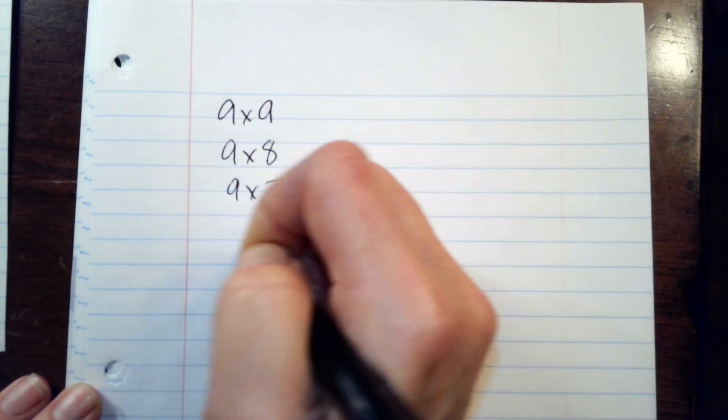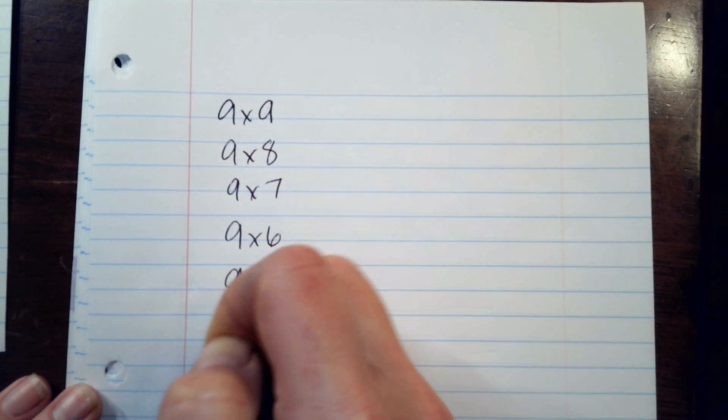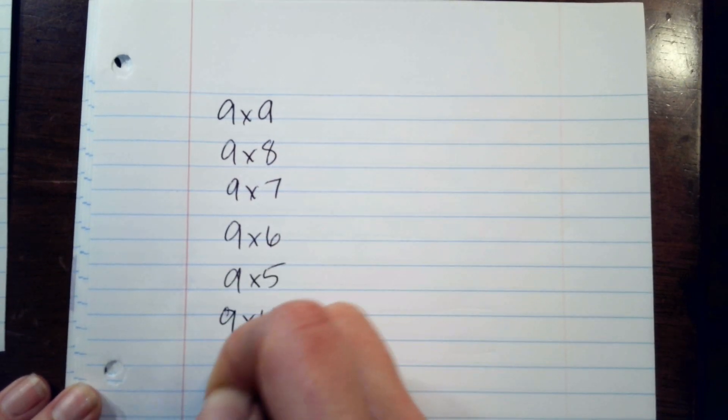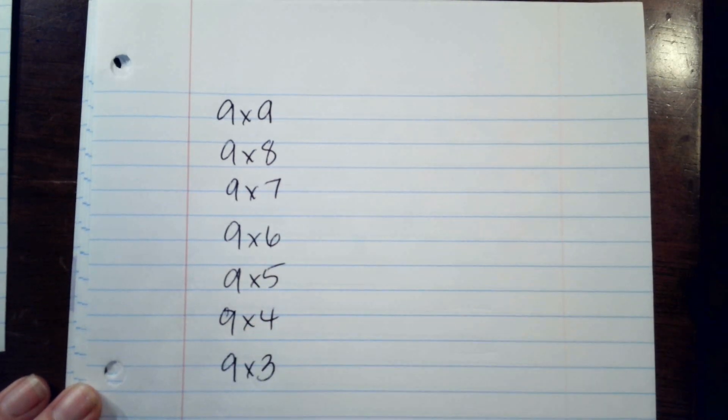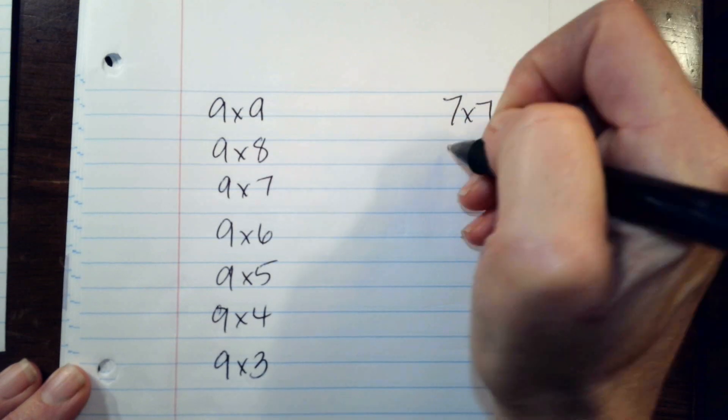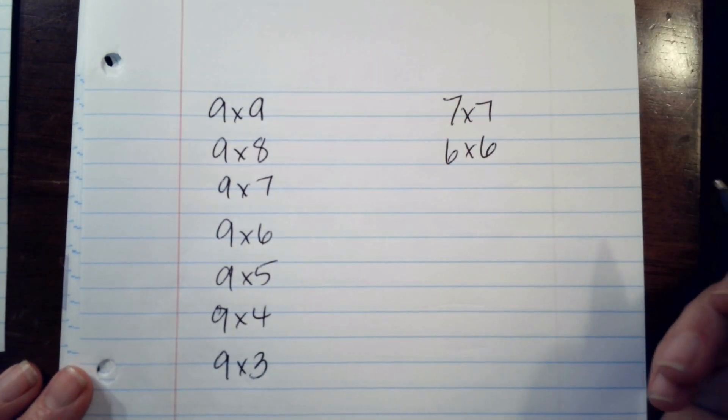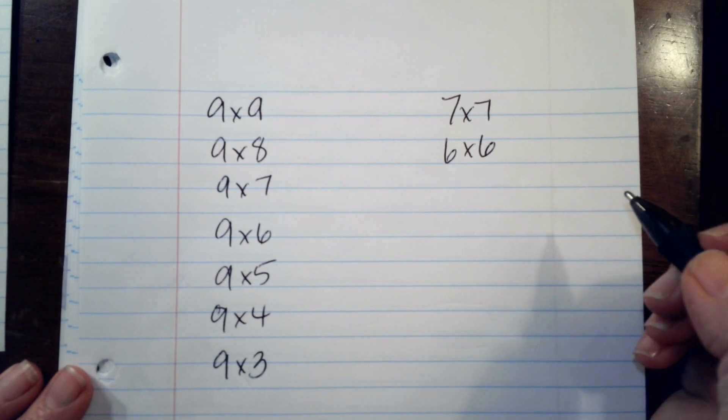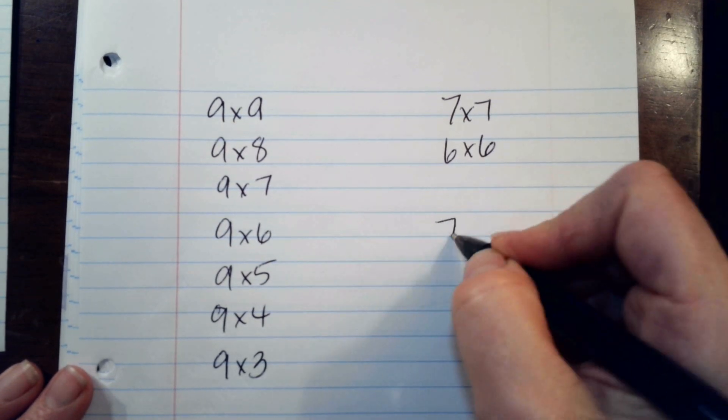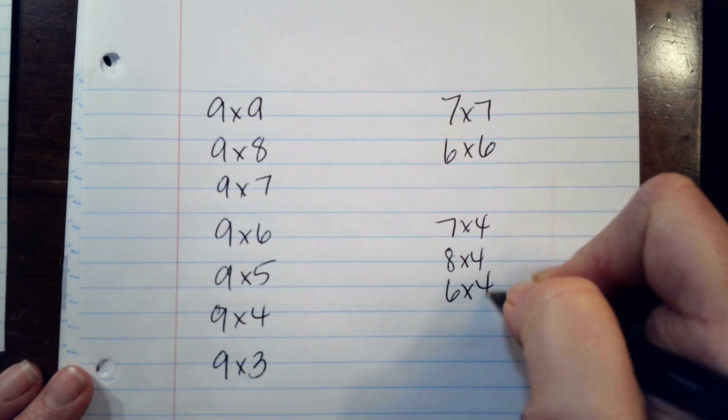So nine times nine, nine times eight, nine times seven, nine times six, nine times five, nine times... I remember the strategy, but I think it was make the second number lower. That's okay, I'll explain it to you.